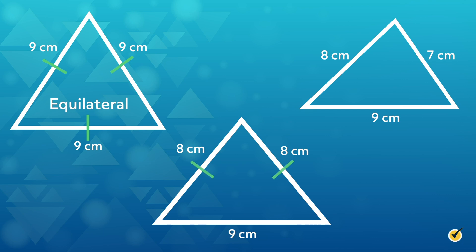In the middle triangle, we can see that two of the sides are the same length and measure 8 cm, while the third is 9 cm. When two of the sides of a triangle are the same, it's called an isosceles triangle.